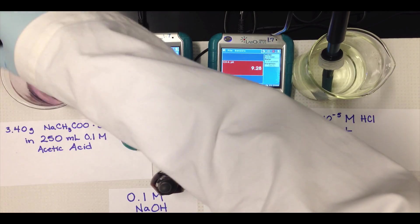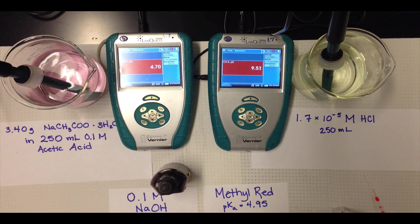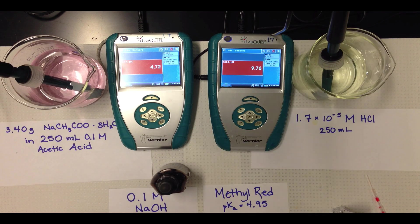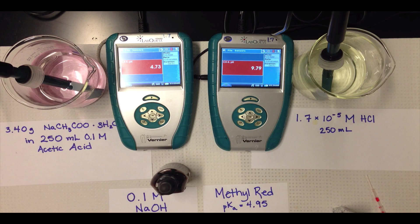After stirring, we see that the indicator changes color in the HCl solution, but remains red in the buffer solution. And the pH readings in the two solutions indicate that the pH has increased drastically in the HCl solution, approaching 9.9, while the pH has remained at 4.7 in the buffer solution. So the buffer solution has resisted a change in pH, thanks to the ability of the acetic acid to react with the added strong base.